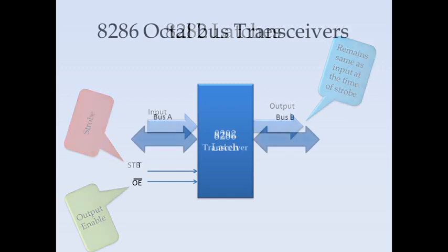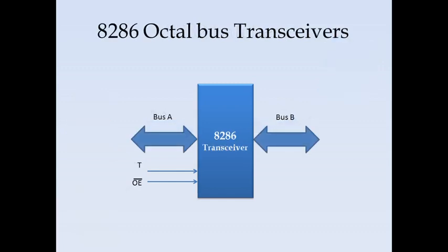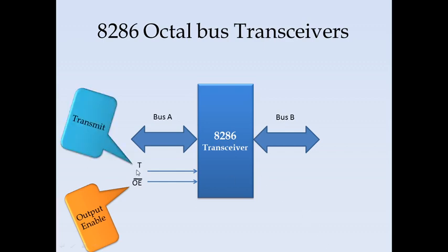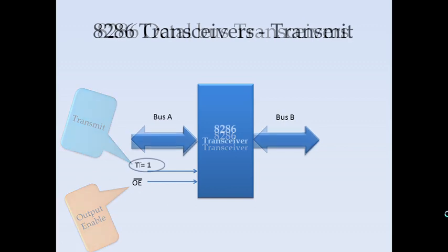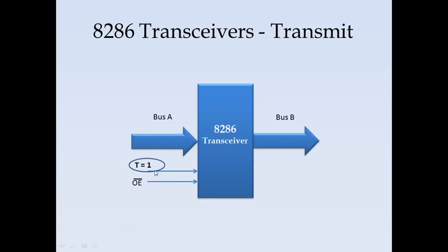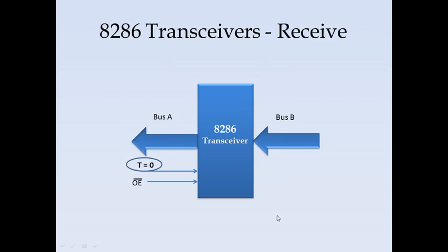Next we have the 8286 octal bus transceiver. It has two buses — bus A and bus B — both are bidirectional. We have the output enable signal: when this signal is active, the transceiver functions. Then we have the transmit or direction pin T. When T equals 1, bus A acts as input and bus B acts as output, so the direction of transmission is from bus A to bus B. When T equals 0, bus B acts as input and bus A acts as output, so the direction of transmission is from bus B to bus A.